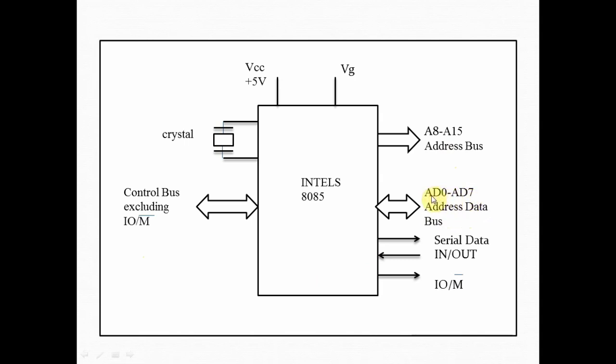The low order address bus that is A0 to A7 is multiplexed with the data bus D0 to D7. So here the pins are named as AD0 to AD7. That means the address bus A0 to A7 and data bus D0 to D7 they are multiplexed together. The meaning is that the least significant 8 bits of address bus are transferred on the same 8 lines of data bus.